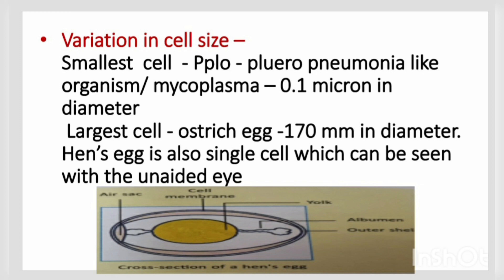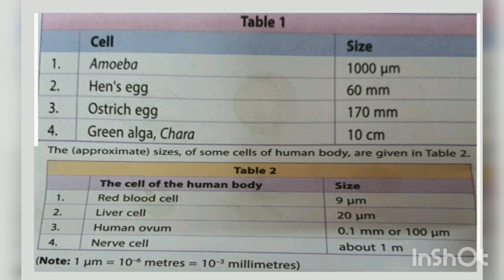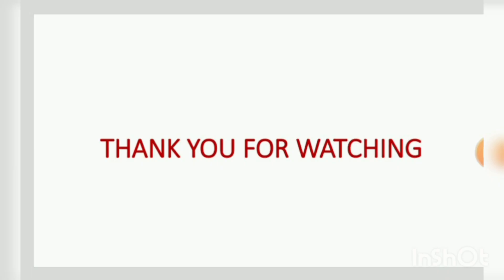A table shows different cell sizes: Amoeba is 1000 micrometers, hen's egg 60 mm, ostrich egg 170 mm, and green algae 10 cm. For human body cells: red blood cells are 9 micrometers, liver cells 20 micrometers, human ovum 0.1 mm (100 micrometers), and the nerve cell about 1 meter in length. In the next part of the video, we will talk about how the cell looks and the functions of its organelles.